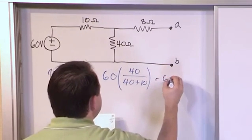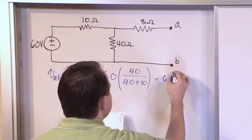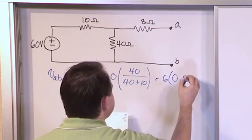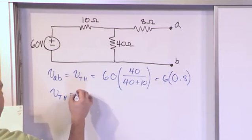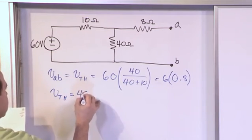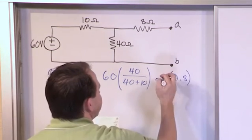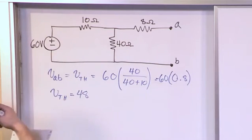So what you're going to have is 60 times, we'll do 0.8 inside. So what we've really found is V_Thevenin is equal to 48 volts, because this is not a 6, of course, it's a 60, like that. So it's 60 times 0.8 on the inside. 48 volts.